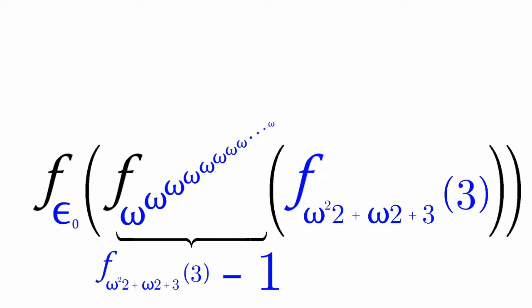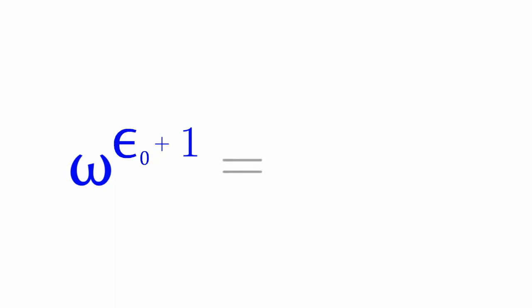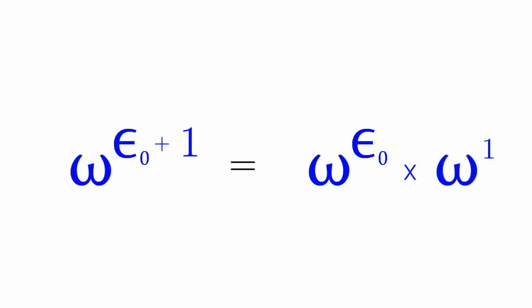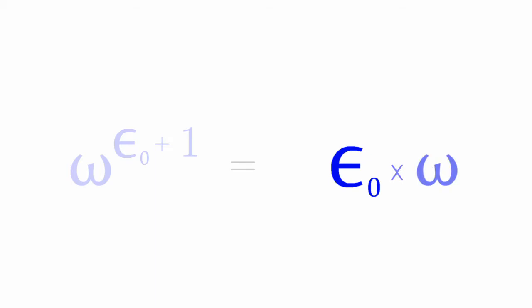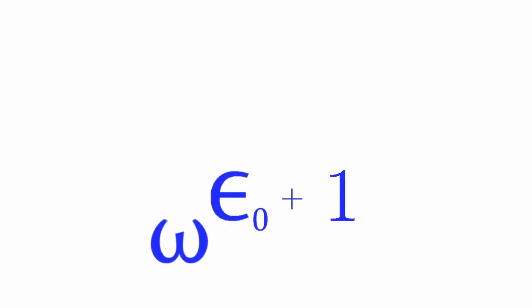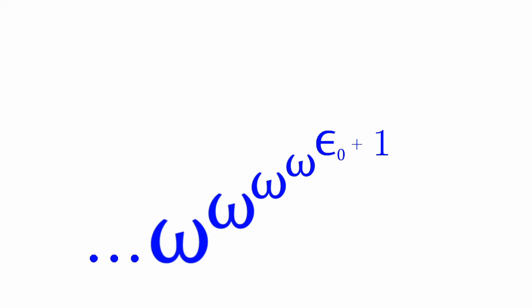We can't get bigger with omega to the epsilon_naught, but we can get bigger with omega to the epsilon_naught plus 1. By the rule of exponents, this is equal to omega to the epsilon_naught times omega to the 1, or simply just omega. And omega to the epsilon_naught collapses into just epsilon_naught. Now we have epsilon_naught times omega. We can have omega to the epsilon_naught plus 1, and we can have an infinite tower of omegas exponentiated with epsilon_naught plus 1 at the top.